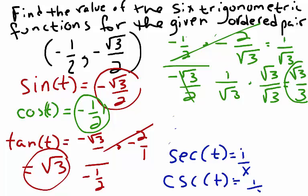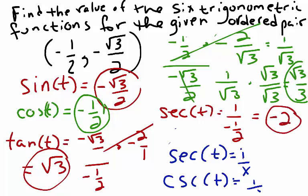Next we'll find secant of t. Secant of t is equal to 1 over x, so we have 1 over negative 1 half. Multiplying by the reciprocal gives us secant of t equals negative 2.